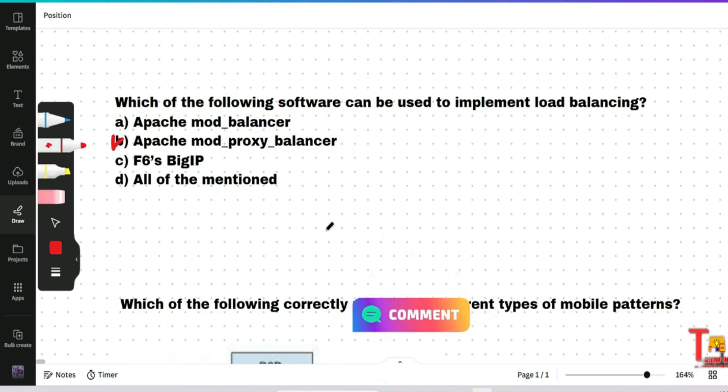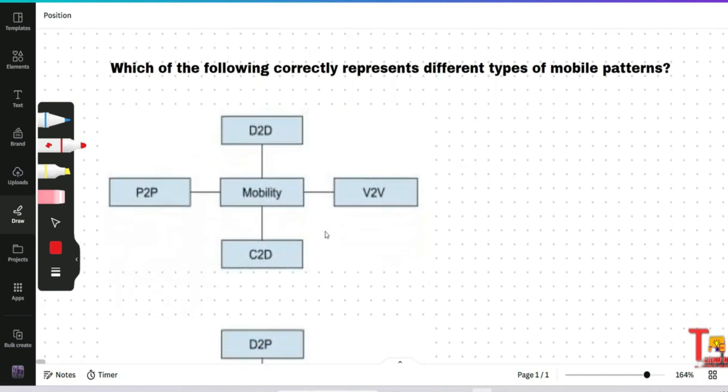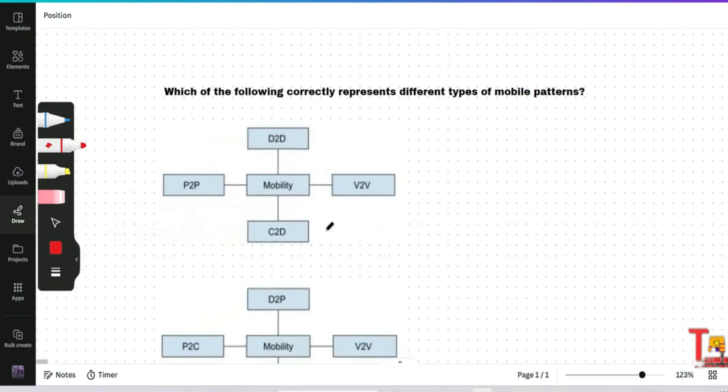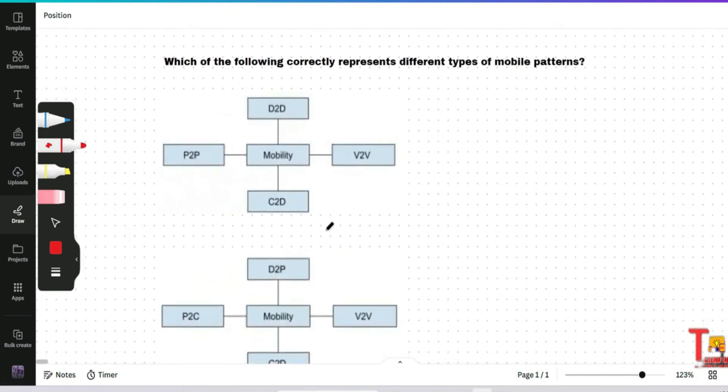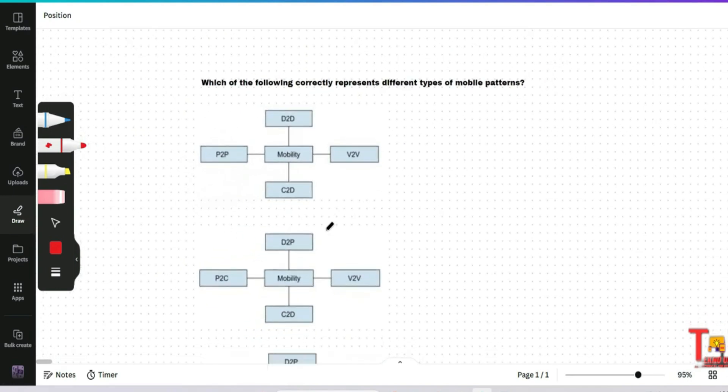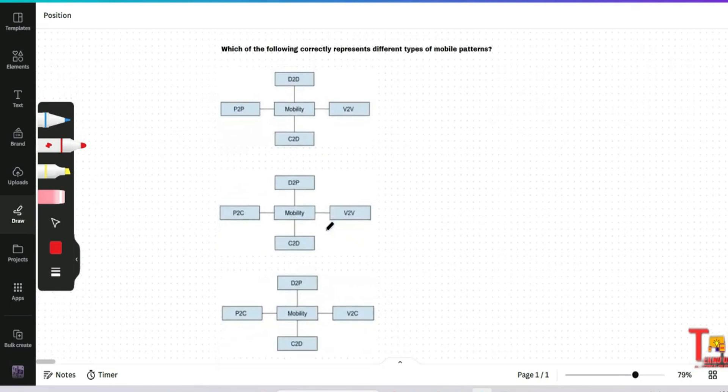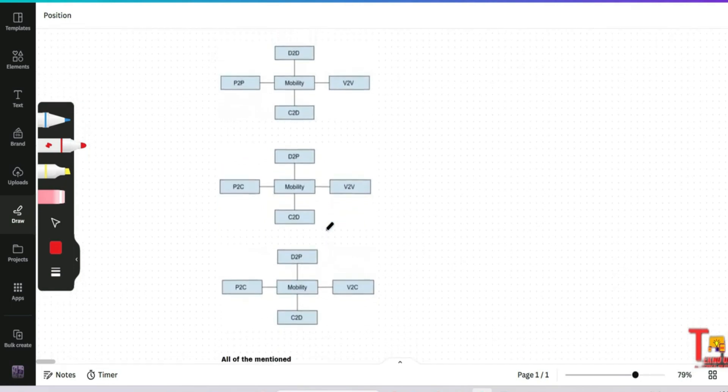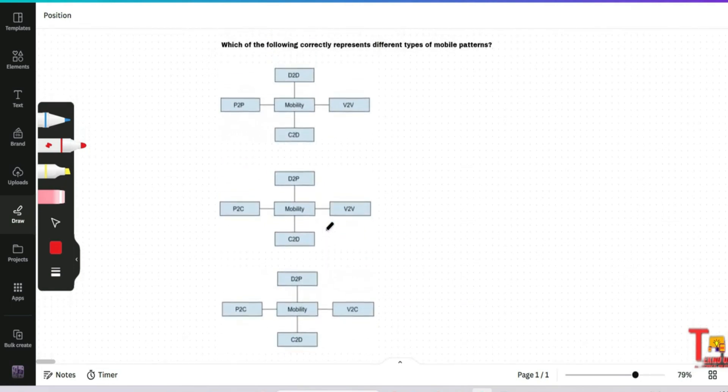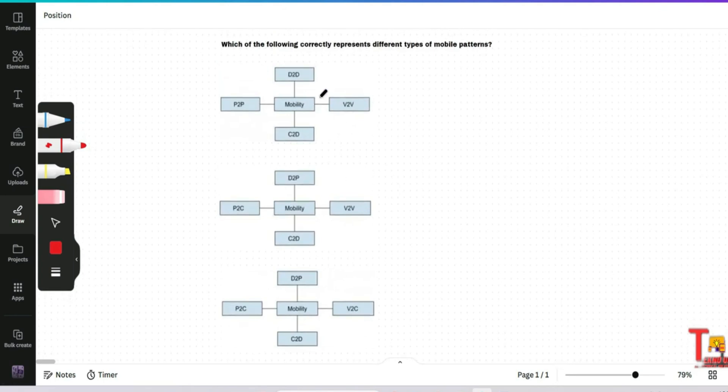Okay, the next question is which of the following correctly represents different types of mobile patterns? Please pause the video and try to give me the solution. I am not discussing this question in this video, I will discuss this if you want in the next video. So this will be a quiz question for you. Please pause and research about the question, you will get to know a lot of things.